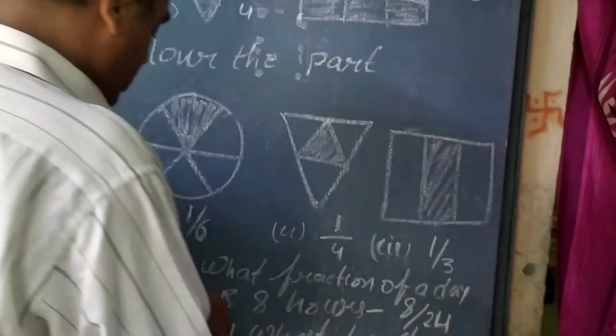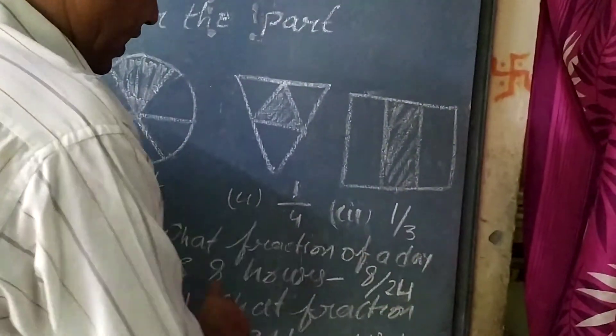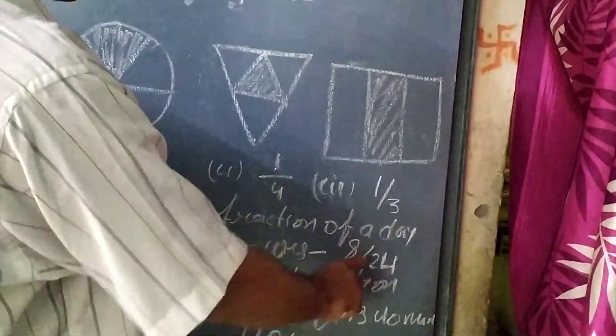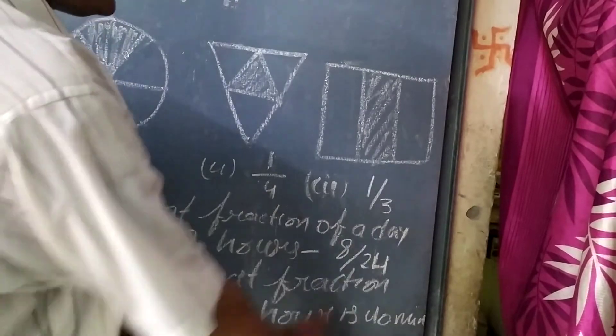Now in question number 4, what fraction of a day is 8 hours? There are 24 hours in a day. So 8 by 24, that is the answer.